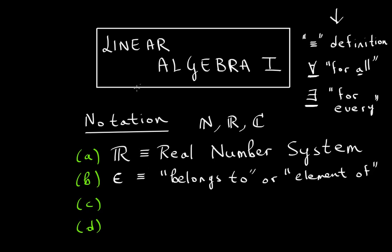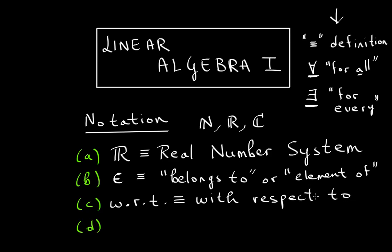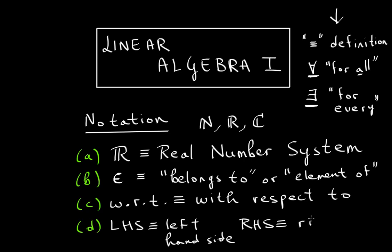Some other shorthand notation: WRT means 'with respect to,' LHS means 'left-hand side,' and RHS means 'right-hand side.' I will also give examples once I define them.